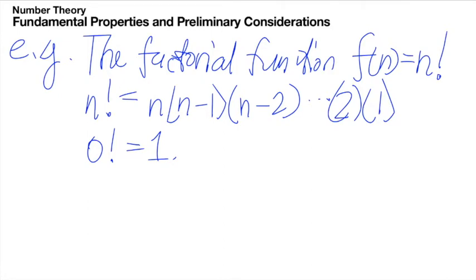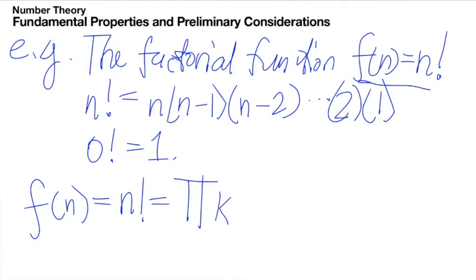Using the product notation to denote this factorial function, we can say that f of n is equal to n factorial, which is equal to the product of all the k, where k runs from 1 to n. You know, do the necessary changes there in the values.